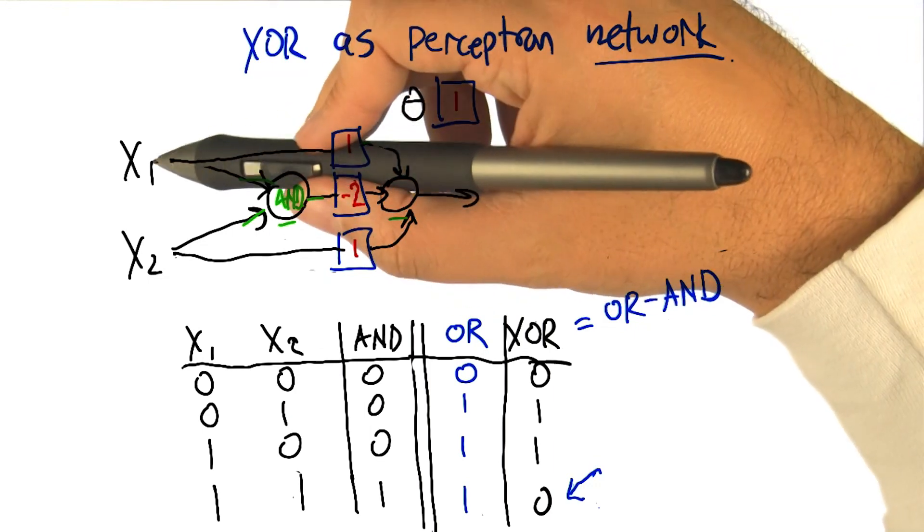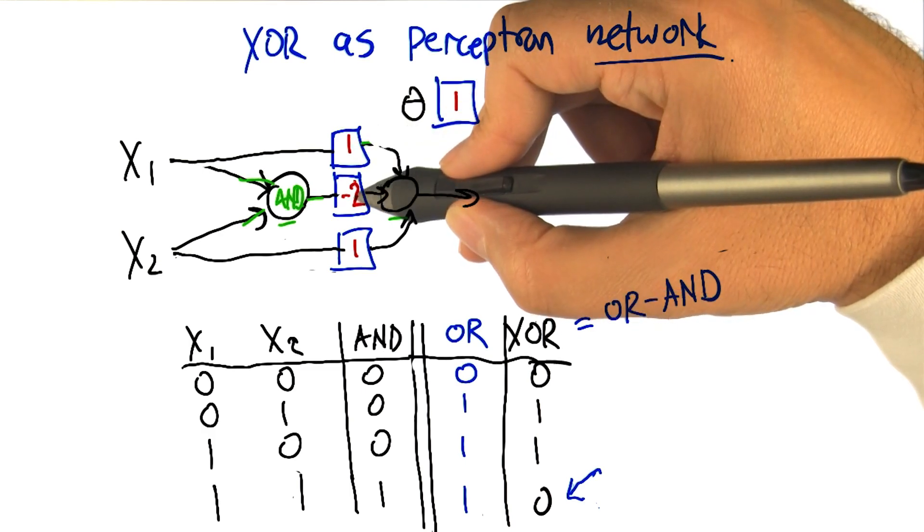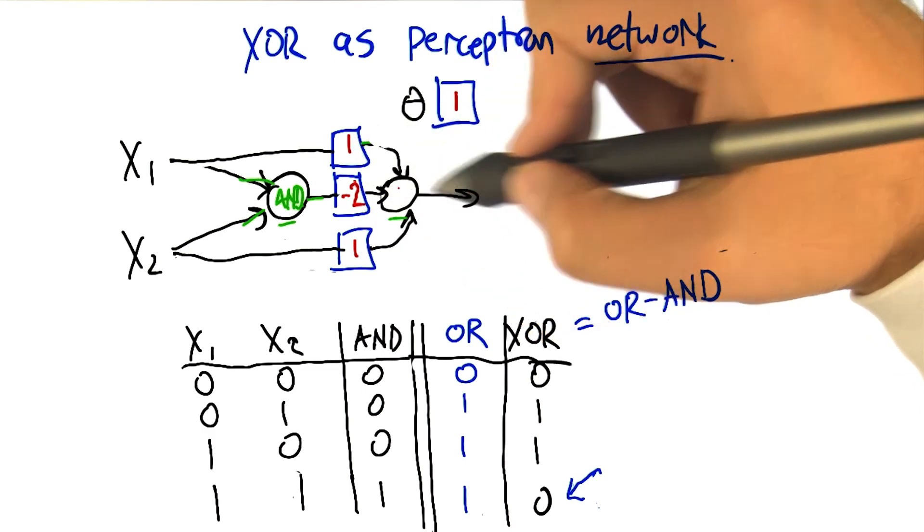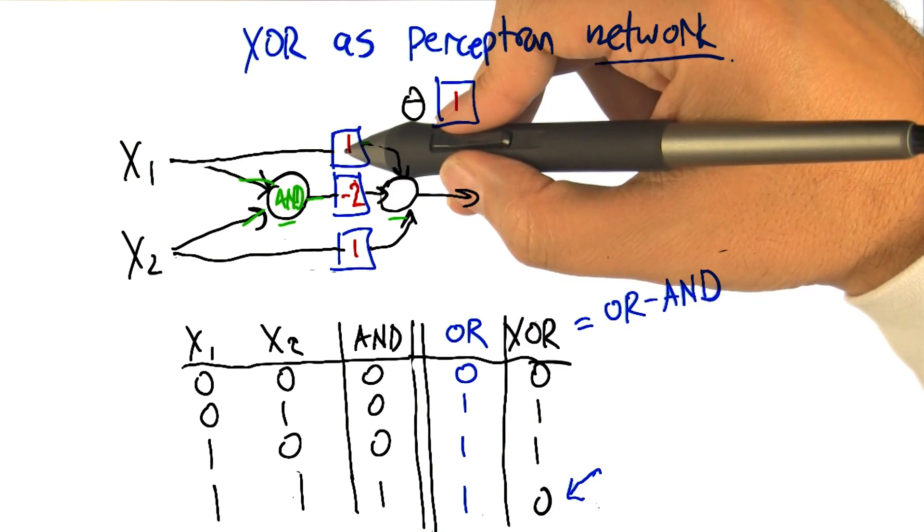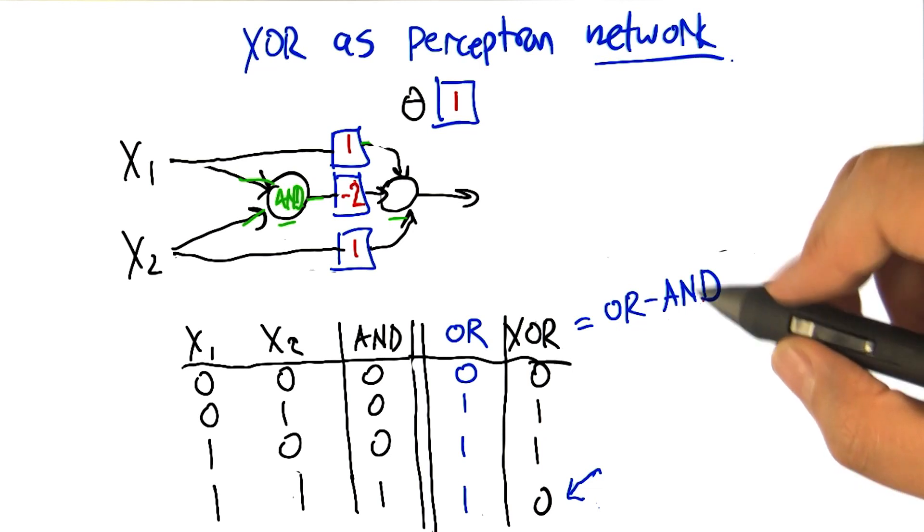Then we've got x1 and x2, if they're both on, then we get a sum of one minus two plus one, or zero, which is less than our threshold, so it will output zero. And in the other two cases, right, when AND is off, then it just acts like OR. So this actually kind of does the right thing.